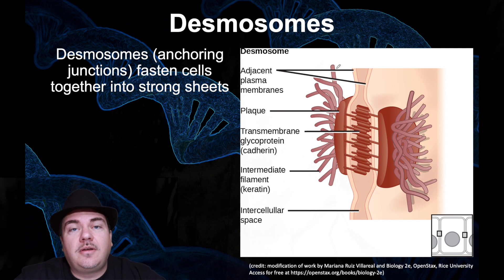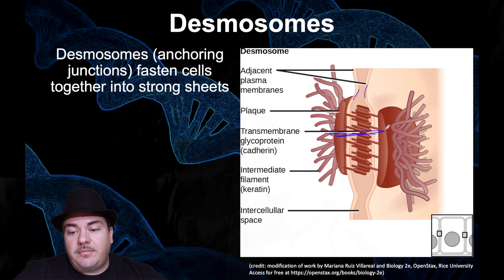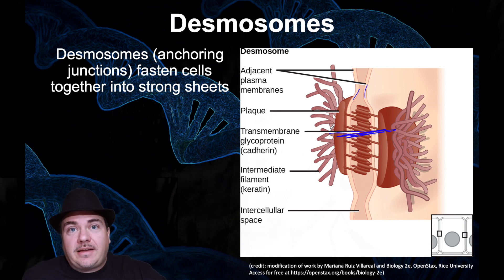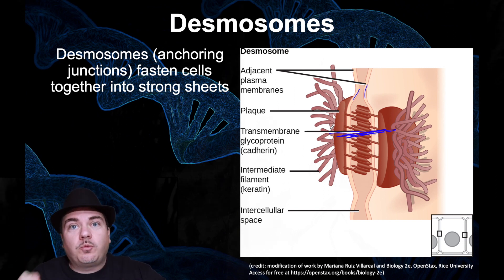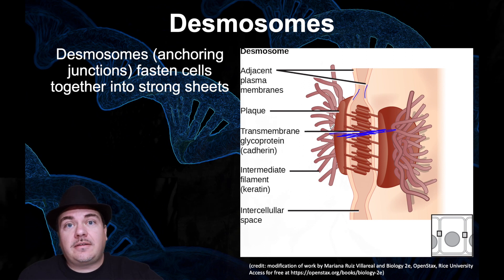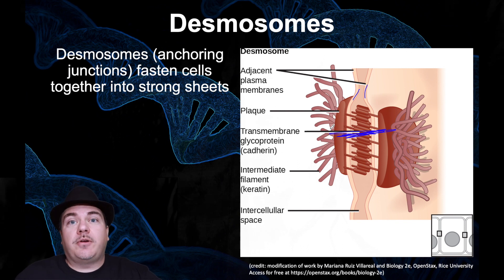The next type is called a desmosome. A desmosome takes the plasma membrane of two animal cells and joins them together, but only at one spot. A good analogy is the little metal rivet on your blue jeans where the denim of the pocket meets the denim of the pant leg. That rivet attaches the two pieces of denim together very tightly but only at one spot — you can still slide your hand in between and put it into your pocket. That's what a desmosome does.